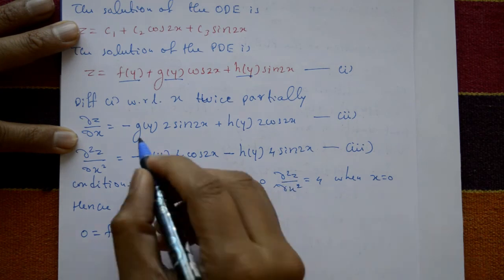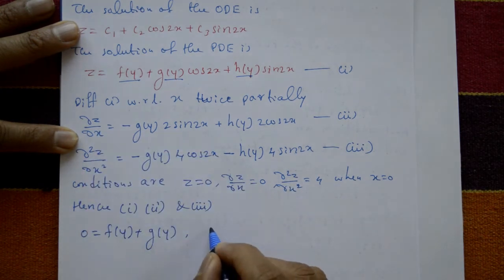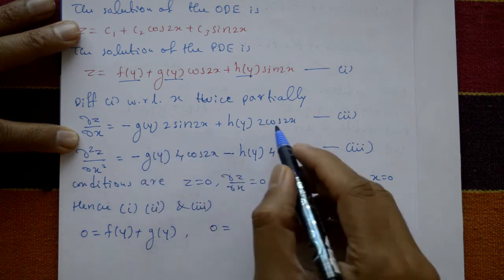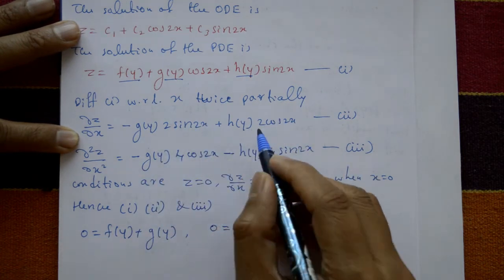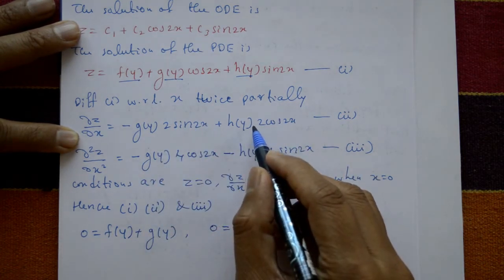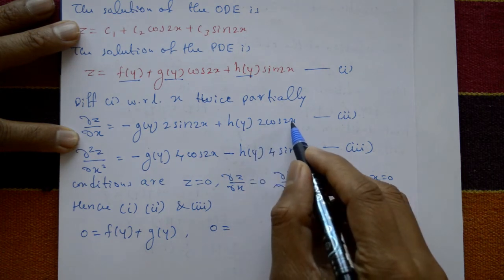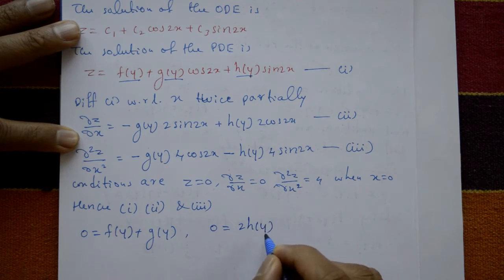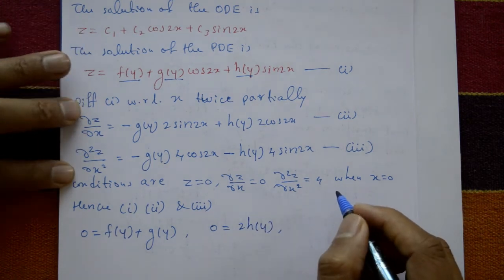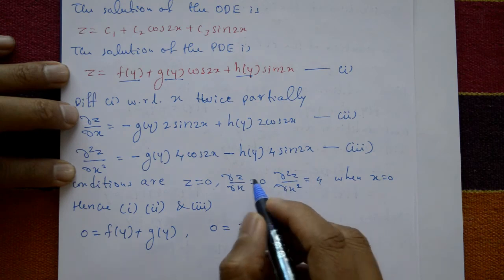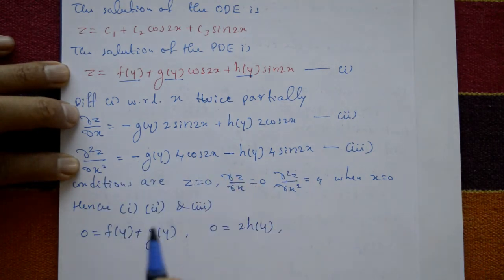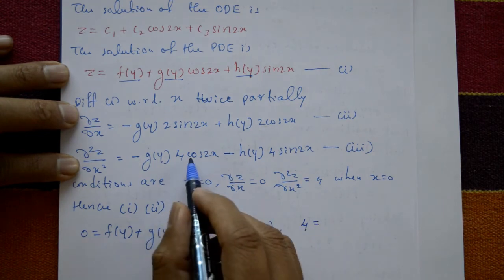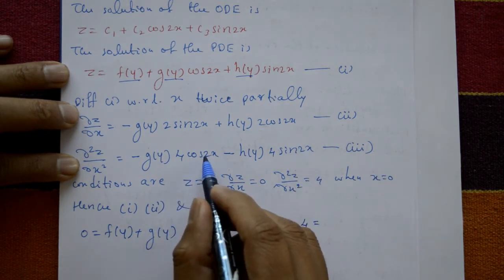From equation 2, substituting dz/dx = 0 and x = 0: sin(0) = 0 and cos(0) = 1, giving 2h(y) = 0, so h(y) = 0. From equation 3, substituting d²z/dx² = 4 and x = 0: cos(0) = 1, giving −4g(y) = 4.